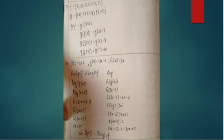For gof: f(1) = 3, then g(3) = 7, so gof(1) = 7. Similarly f(2) = 5, g(5) = 9, so gof(2) = 9. And f(3) = 7, g(7) = 10, so gof(3) = 10. The tenth question also includes h in the composition.